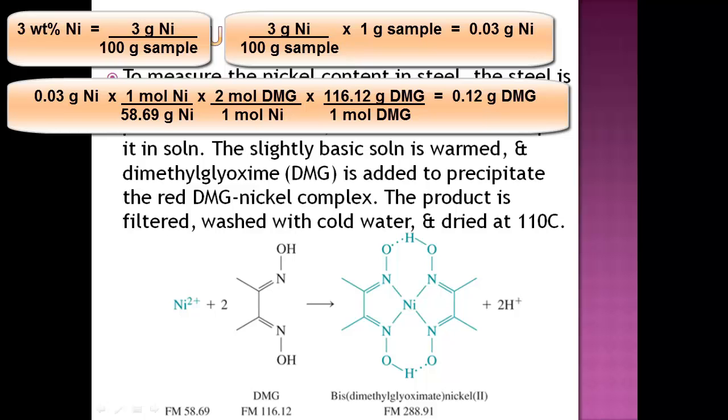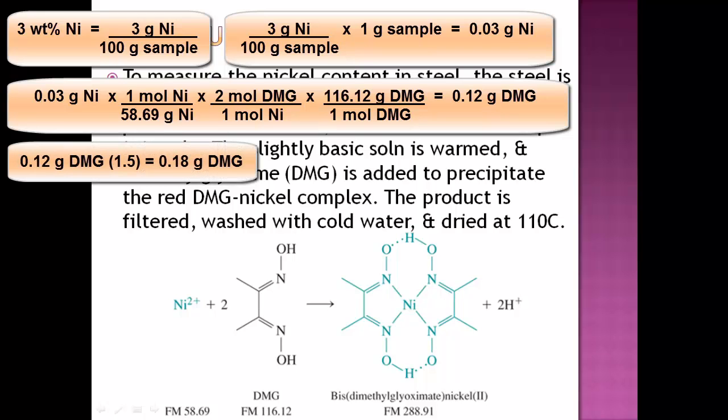Now we look back and notice that the problem said, I want to know how much volume of this one weight percent. They want you to figure out how much you need if you wanted to get 50% excess of DMG. That's a trick. You've got the grams of DMG that you would need, but that's if they wanted to know a one to one ratio. They want to know a 50% excess. So whatever answer you get, which should have been 0.12 grams of DMG, you multiply that times 1.5, because they want 50% excess. That'll give you 0.18 grams of DMG.